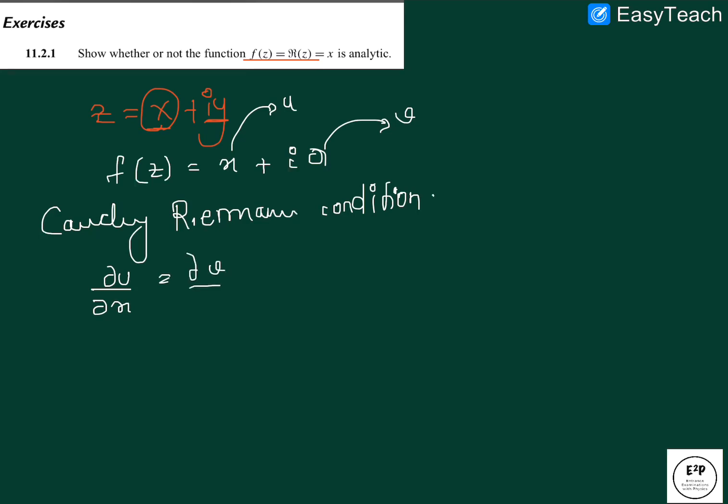equal to ∂v/∂y. So for the left hand side we have ∂x/∂x, that gives us 1, and on the right hand side we have ∂v/∂y, that gives us 0. So these two are not equal, so